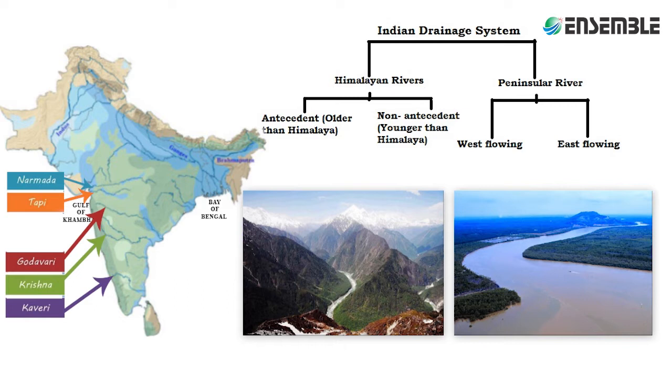These rivers can be divided into two portions: those that flow into the Bay of Bengal region, and those that flow into the Arabian Sea.